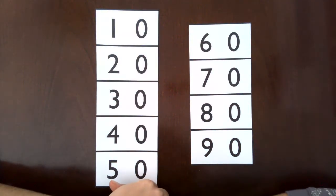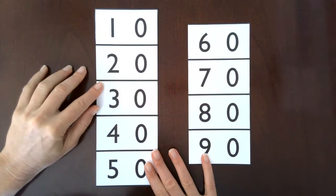This is the second lesson in identifying the numerals 10 through 90, and the purpose is to teach the children the names of 10 through 90 in association with the symbols of the numerals.